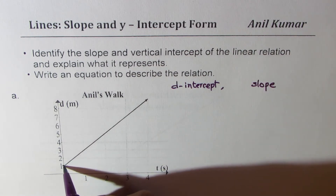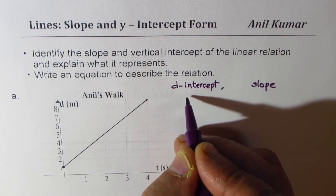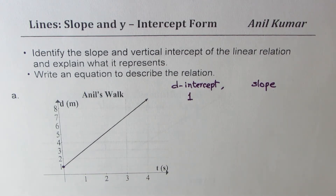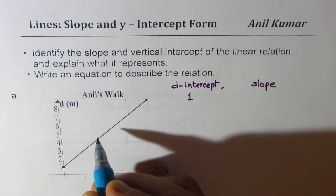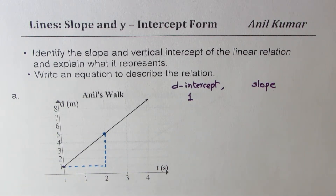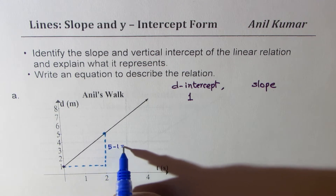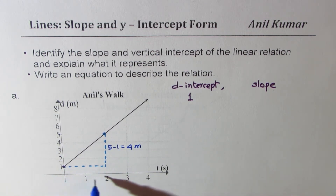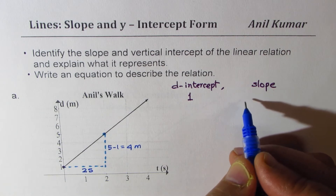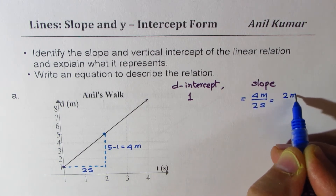The D intercept is the point where the line crosses the vertical axis, which is one. So the D intercept is one — the vertical intercept is one. To find the slope we need to do rise over run, so let's select two points. We see that the rise is from one to five, that is five minus one which is four meters. And the run is from zero to two, which is two seconds. So the slope is equal to four meters per two seconds, or two meters per second.